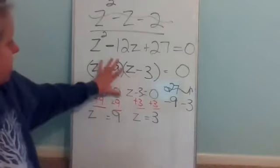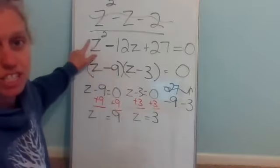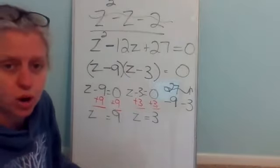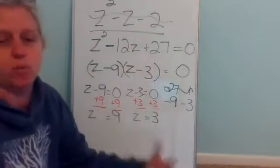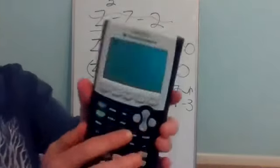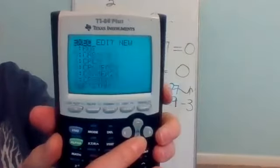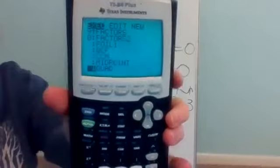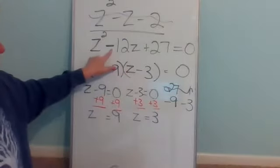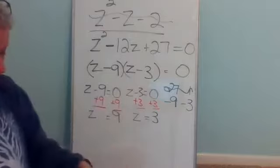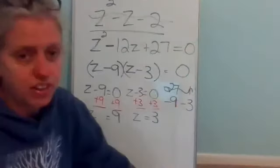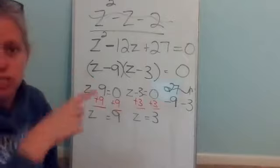Could I have made this easier? Anytime you're solving a squared equation, you can use the quad program by going to Program, then down to Quad. Type in your A, B, and C. A would have been one, B would have been negative 12, and C would have been 27 — and there's the nine and three. Anytime you are solving a squared equation, there is no reason why you shouldn't use your quad program.